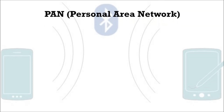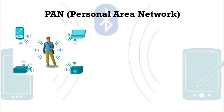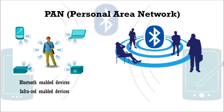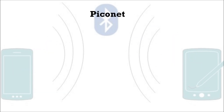PAN — Personal Area Network — is the smallest network, which is very personal to a user, such as Bluetooth-enabled devices or infrared-enabled devices. PAN has a connectivity range of up to 10 meters. PAN may include wireless computer keyboard and mouse, Bluetooth-enabled headphones, and wireless printers.